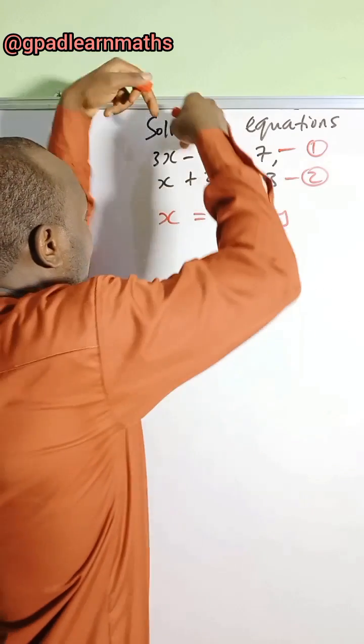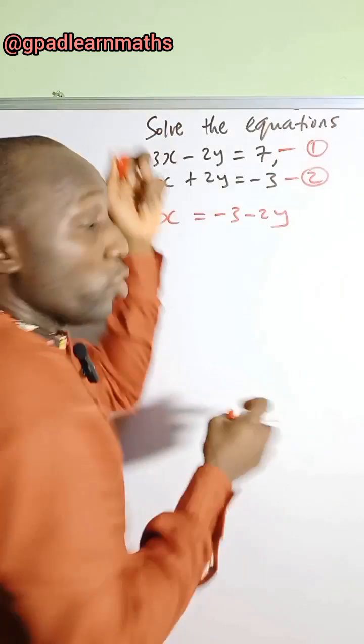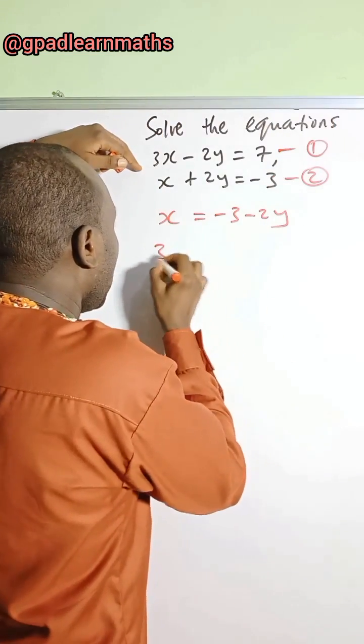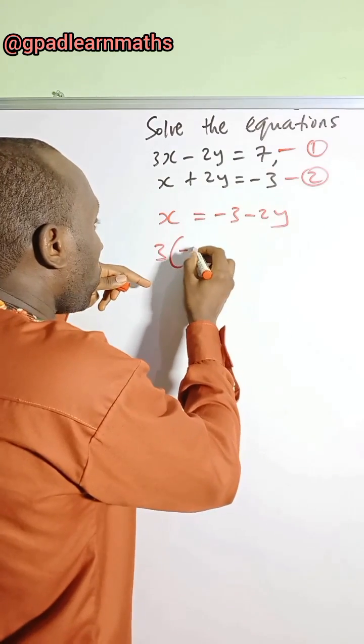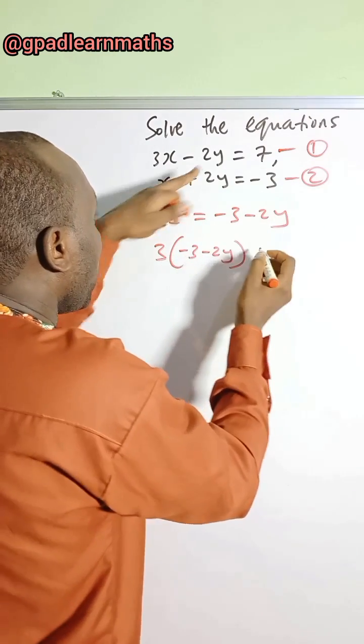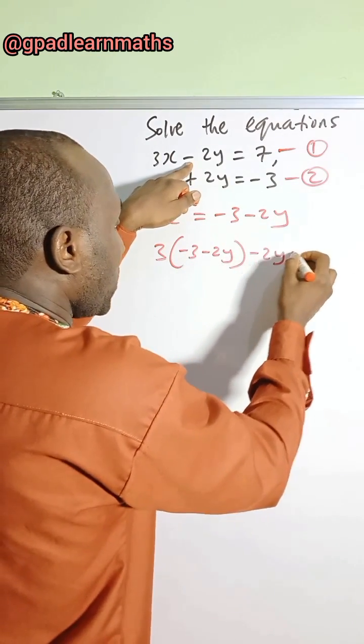Take this expression and plug it into equation 1. If you do that, you will have 3, so I won't be writing x anymore. Rather, I'll be writing this expression, which is minus 3 minus 2y. Then I have minus 2y is equal to 7.